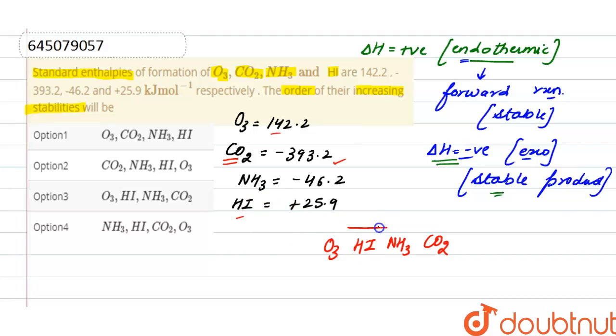So this is our increasing order of stability and the correct option here will be option third. This is our increasing order of stability: ozone, HI, NH3, CO2.